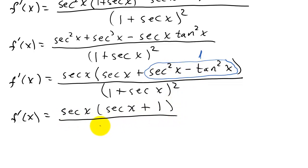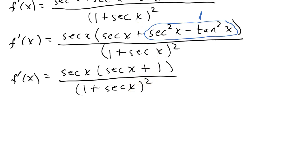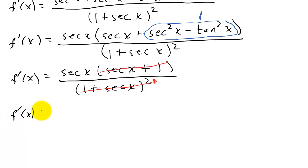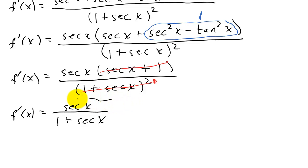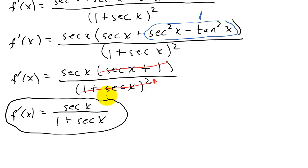So we get f prime of x equals secant x times the quantity secant x plus 1, all over 1 plus secant x, squared. Now secant x plus 1 and 1 plus secant x are the same thing, so they cancel with one factor from the denominator, leaving the exponent as 1. Our final answer is f prime of x equals secant x over 1 plus secant x.